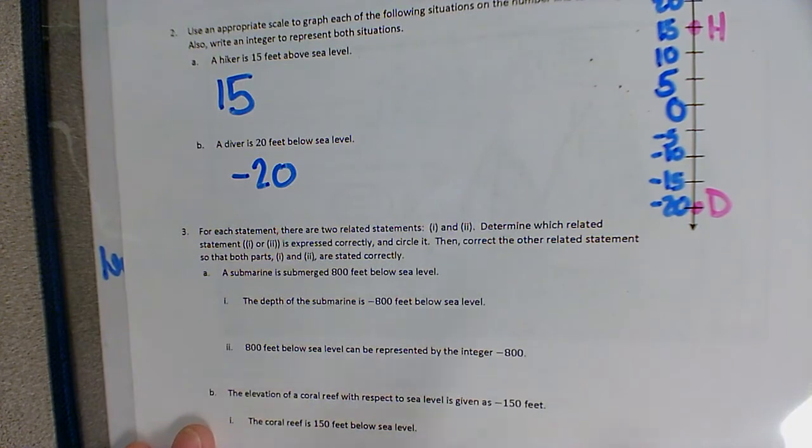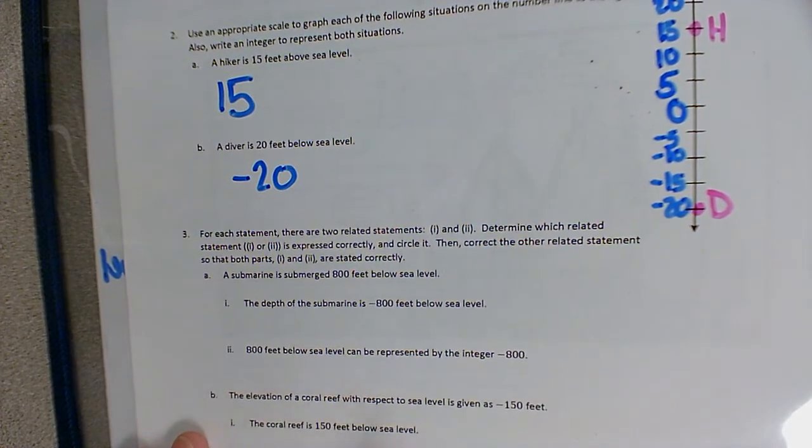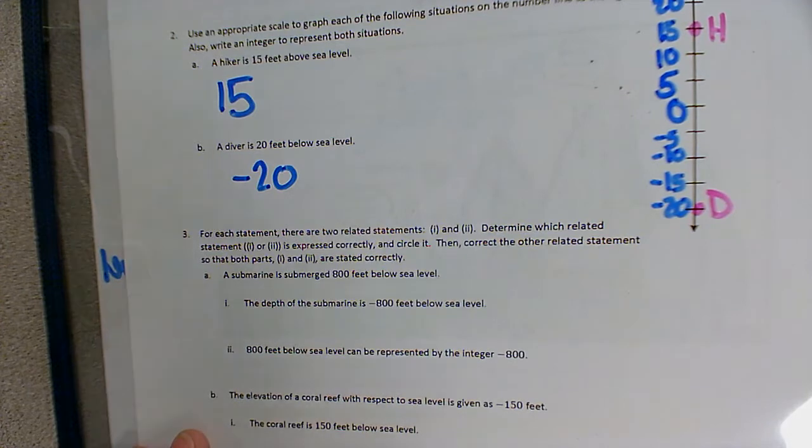Next one is question three. It says, for each statement, there are two related statements, one and two. Determine which statement is expressed correctly and circle it, and correct the other statement so that both parts are stated correctly.